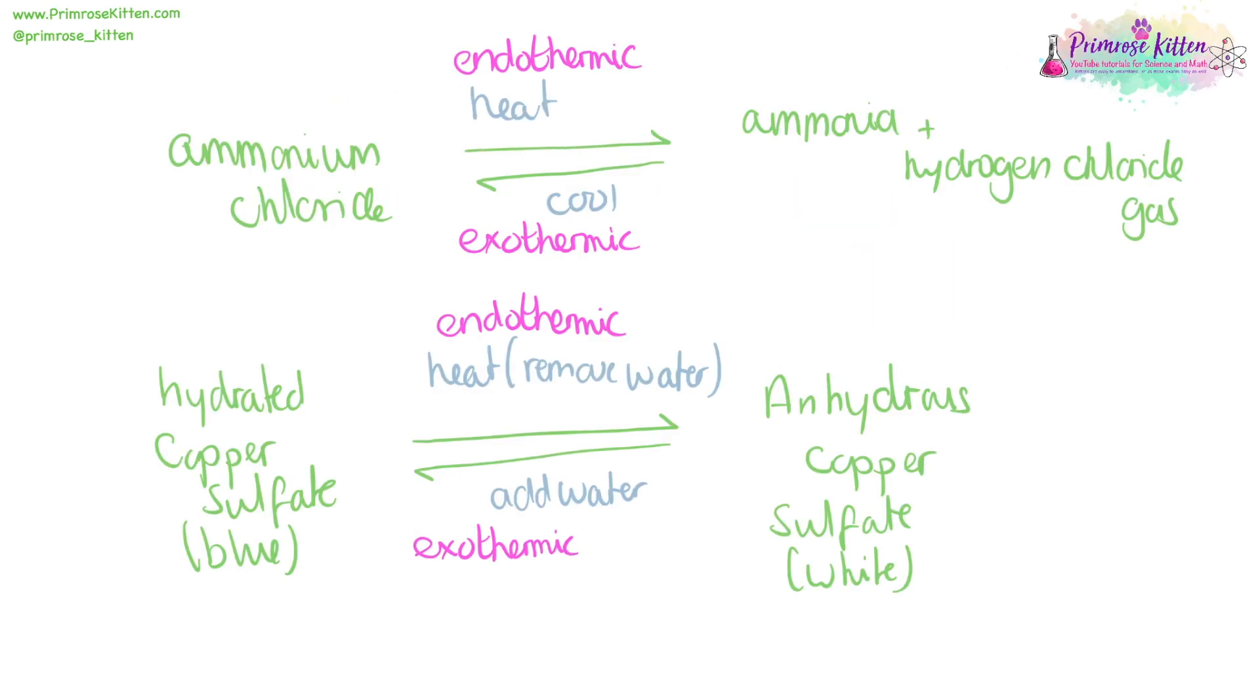This half arrow on top of the other half arrow going in the opposite direction is a symbol for a reversible reaction. Ammonium chloride will decompose into ammonia and hydrogen chloride gas upon heating and this is an endothermic reaction because you need to put heat into it. Cooling it is an exothermic reaction because energy will come out. Hydrated copper sulfate, which is the lovely blue colour, upon heating will lose the water turning to anhydrous copper sulfate which is a white colour. Adding water in will turn it back to hydrated copper sulfate.